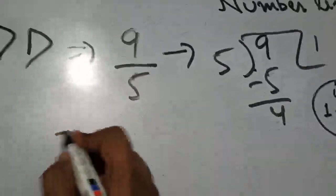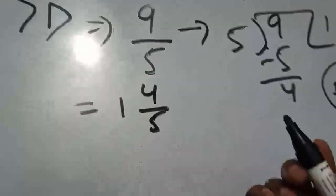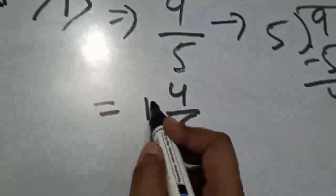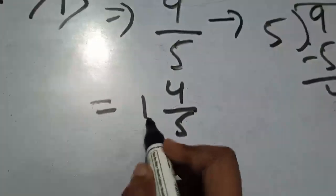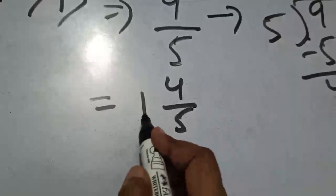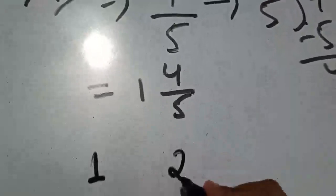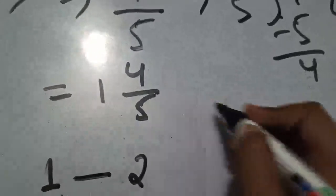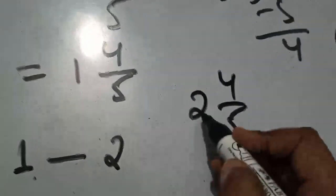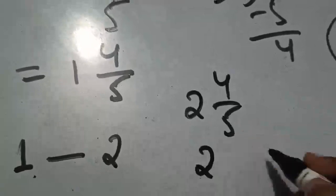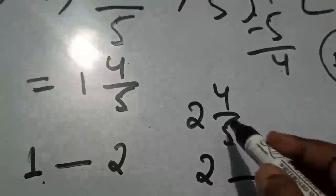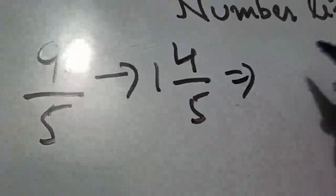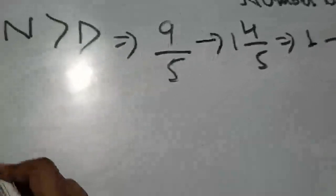Ab is mixed number se aasani se pata chalega ki number kahan lie karega, kitne parts mein divide karein, aur kitna aage badhen. Jo bhi whole wale part mein number aayega — us number aur uske just aage wale number ke beech mein value lie karegi. For example, 2 whole 4 by 5 hota to 2 aur 3 ke beech mein hota. Yahan 1 whole 4 by 5 hai, isliye 9 by 5, 1 aur 2 ke beech mein lie karega.